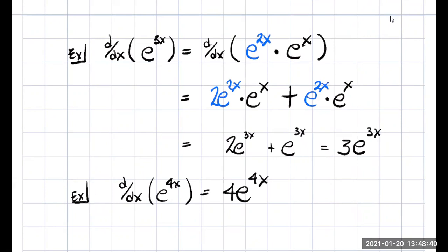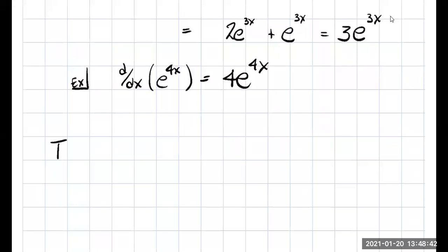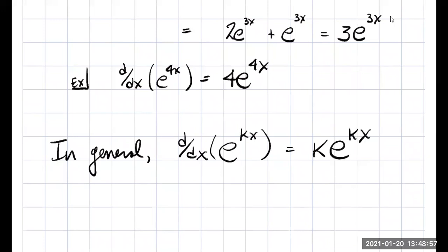Again, let's generalize. Let's just say one time for all time. The derivative of e to the kx, where k is some constant, is equal to k times e to the kx. That's worth remembering, I think, don't you? But what about derivatives to other bases?